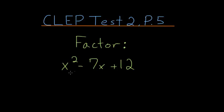In this problem, we need to factor x squared minus 7x plus 12. And remember that factoring is just the reverse of the FOIL method. And FOIL, remember, is used when you have two different binomials multiplied together.